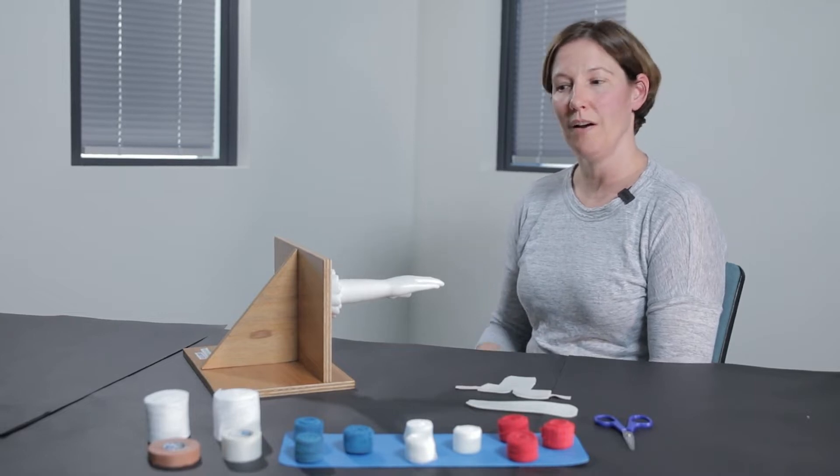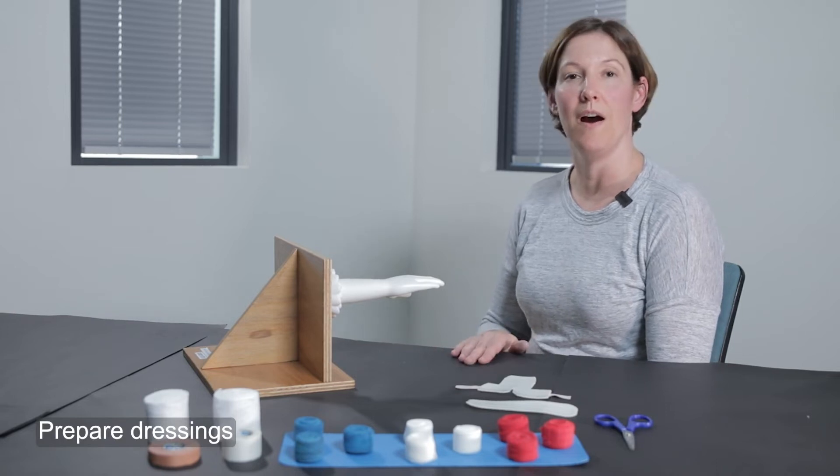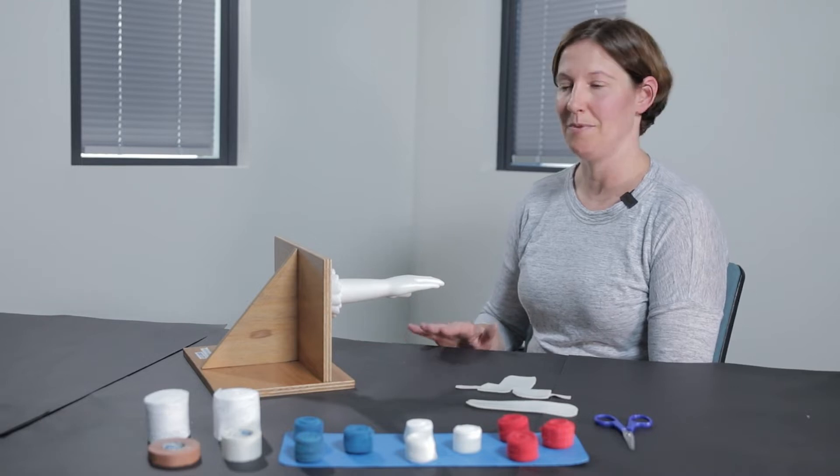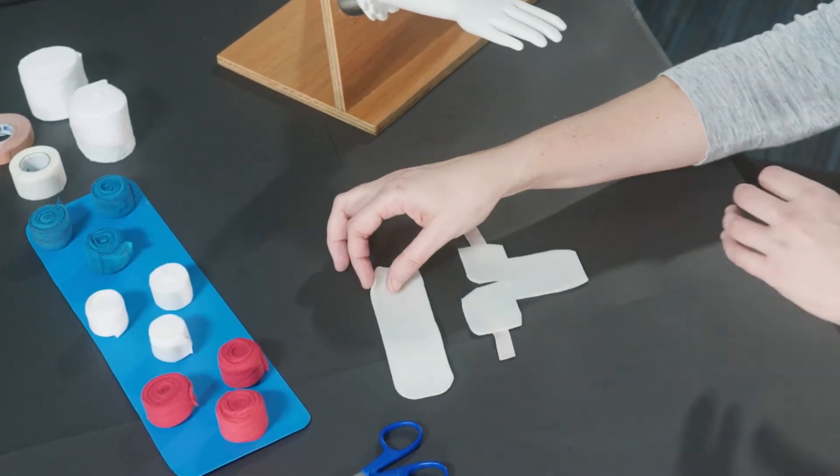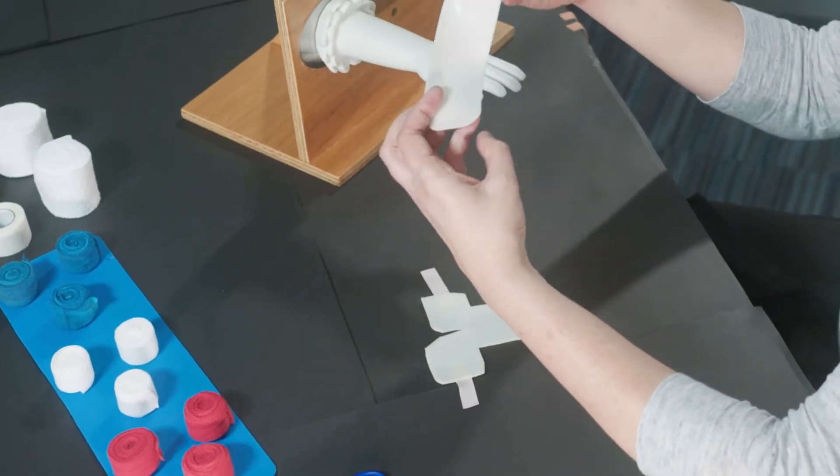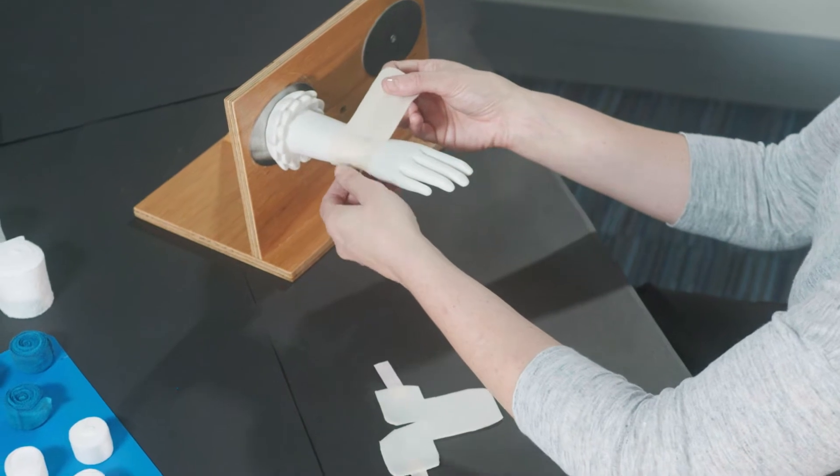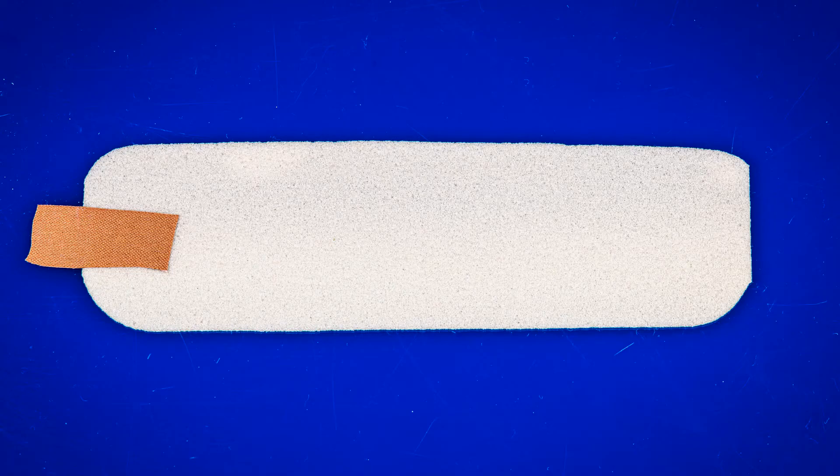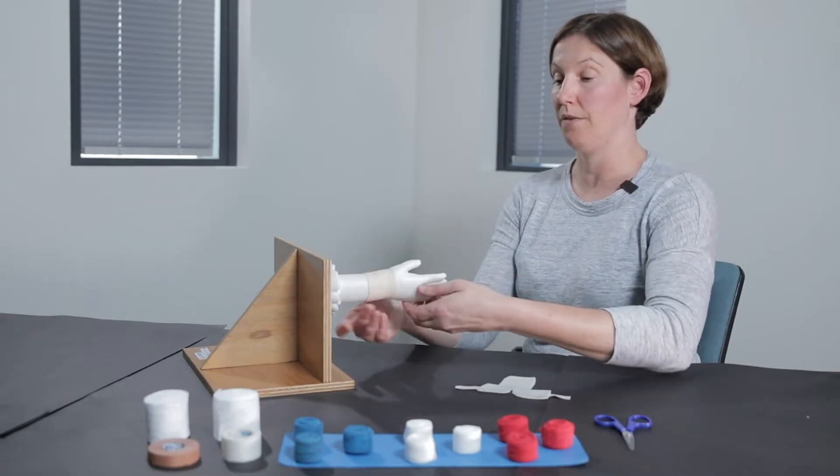It's really important before you begin to prepare all the dressings and products that you require prior to bringing your child over to get started. I'd like to show you first the way of preparing the hand, particularly for children with EB. We're going to secure a layer just around the wrist to provide a layer of protection prior to using the soft bandages we have in front of us today.